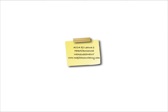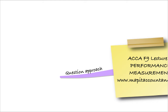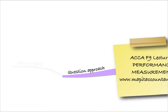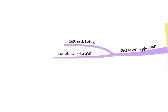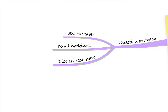So performance measurement. The first thing we need to know how to do for performance measurement for F9 is the question approach. Remember you're going to get a question in the exam and you need to know how to approach it. The question approach is to set out a table. This is a key area in which setting out a table will really help because you can structure your example. Do all of your workings and put them into that table, then once you've done that, you can discuss each ratio.